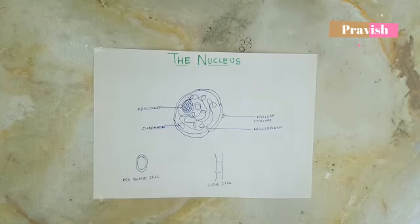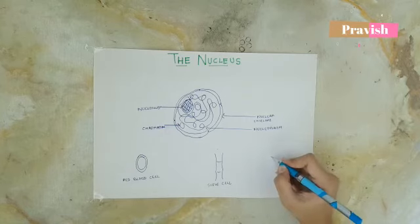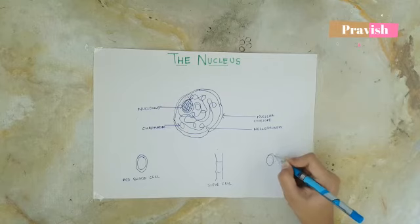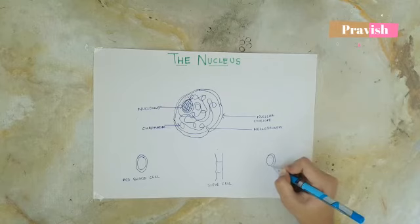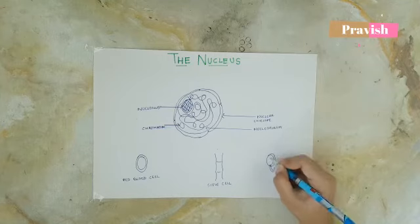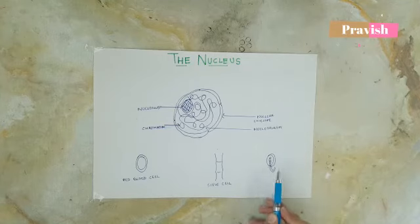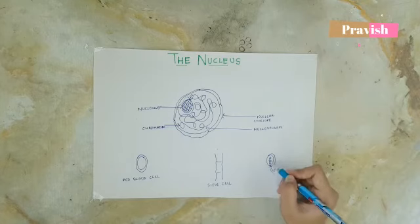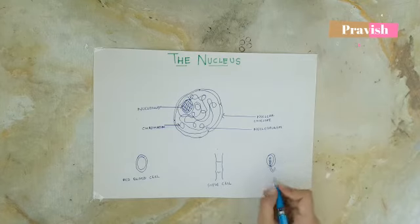Some cells such as the bacteria cells are prokaryotic and do not have a distinct nucleus. Their nuclear information, that is the chromatin, floats on the cytoplasm of the cell.